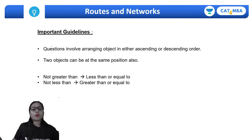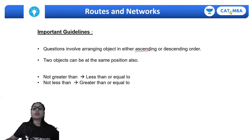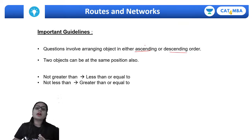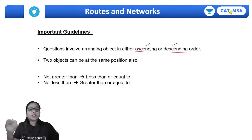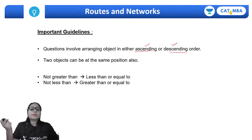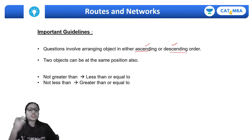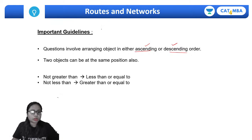The questions will involve arranging objects in either ascending or descending order. Some quantity or parameter will be given — for example, the money with the people, their heights, or their weights — and we arrange the different objects or people on the basis of that parameter. We will see this applied in different questions.